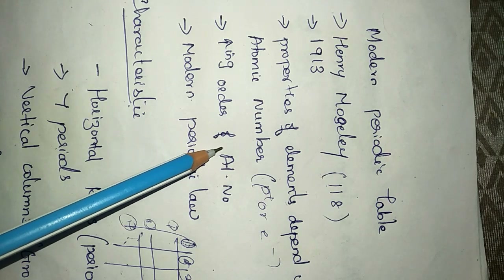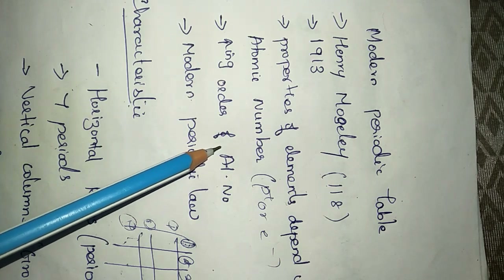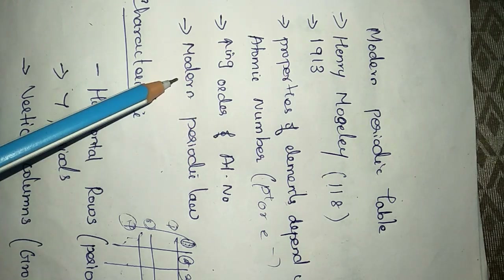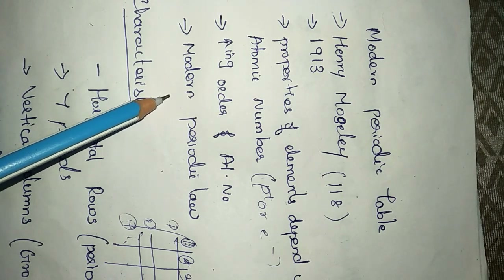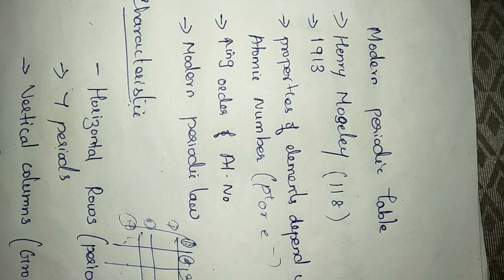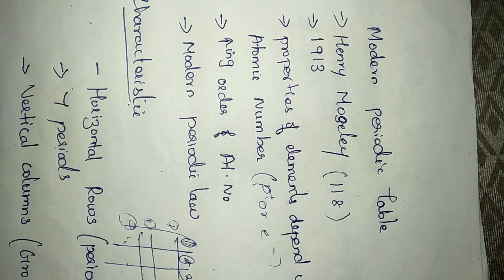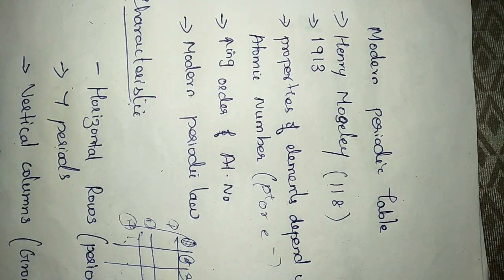If we arrange elements according to atomic number, hydrogen occupies the first position because its atomic number is one and mass number is also one. The modern periodic law states that the physical and chemical properties of the elements are periodic functions of their atomic number — proposed by Henry Moseley.